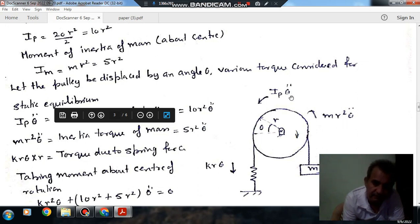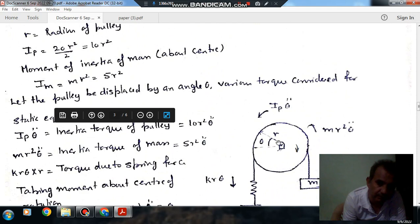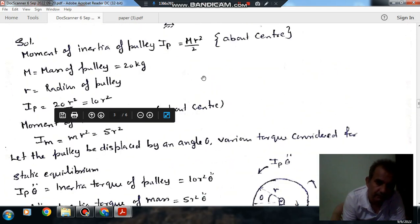So this is the inertia torque created by this mass and this is the inertia torque created by this pulley. So IP is MR square by 2. M is your mass of pulley and R is your radius of pulley.